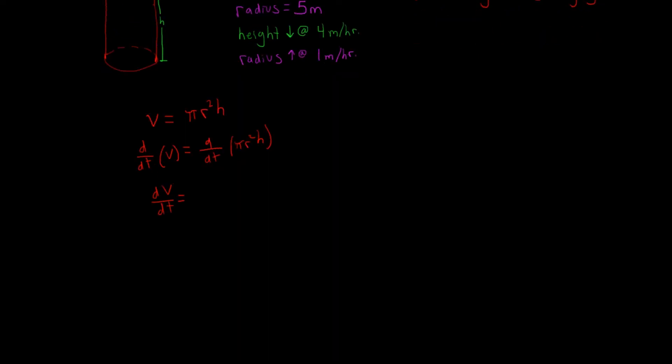Let's write out some more of what we're given. The radius is increasing at a rate of one meter per hour, so that means the derivative of the radius with respect to time is equal to positive one meter per hour.